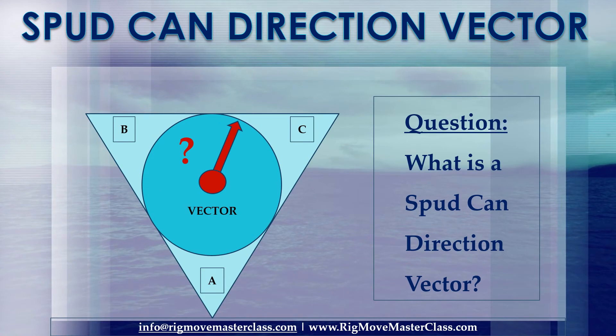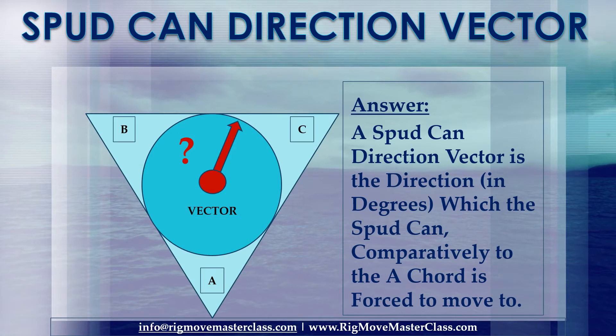Question: What is a spud can direction vector? Answer: A spud can direction vector is the direction, in degrees, which the spud can — comparatively to the A chord — is forced to move to.